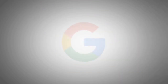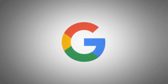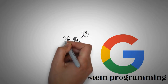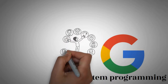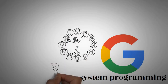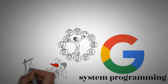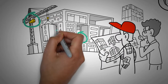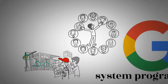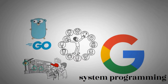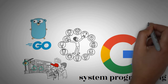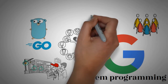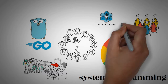Golang is a programming language created by Google, and it is designed for system programming. This means that it's really good at handling a lot of information at the same time and making sure that everything runs smoothly. Think of it as the management of a construction site — there are a lot of people working on different parts of the building at the same time, and it is the job of Golang to make sure that everyone is working together and that the construction site does not collapse.